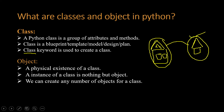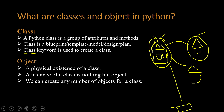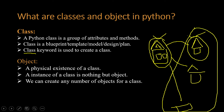We can create any number of objects from a class. Like a house blueprint, we can build any number of houses from it. So this one house, this one house, and this one house — these are all objects. This one is the class and these are the objects.